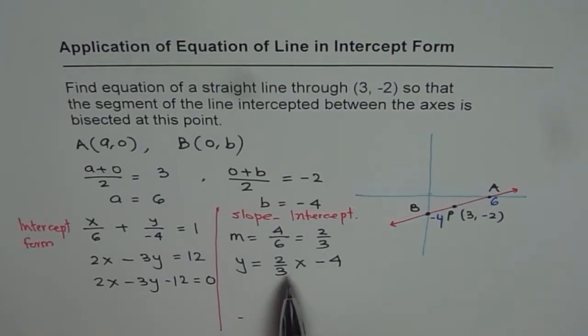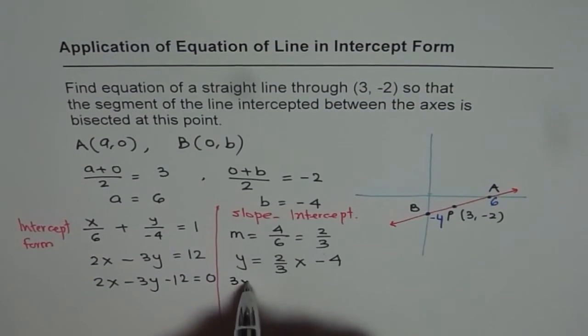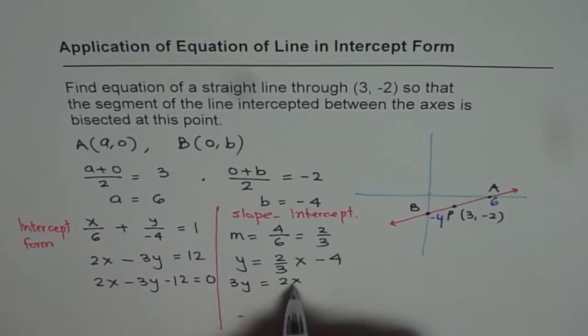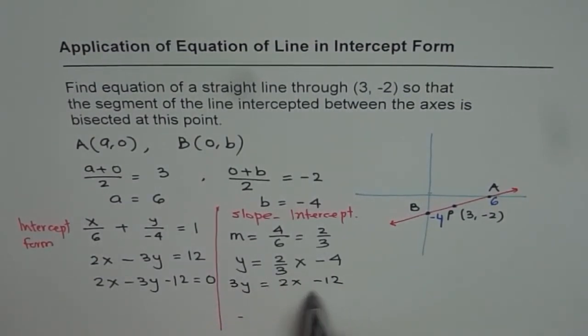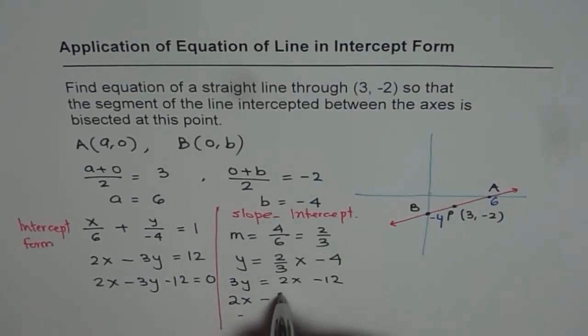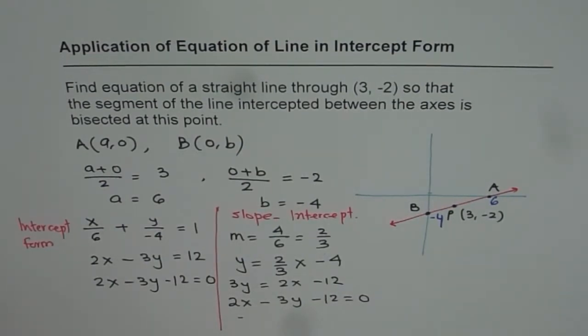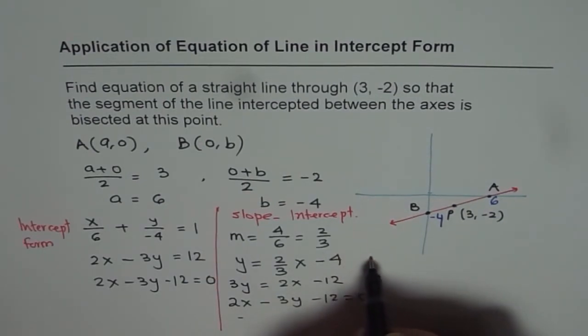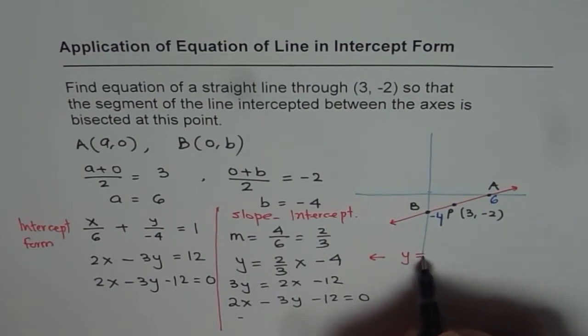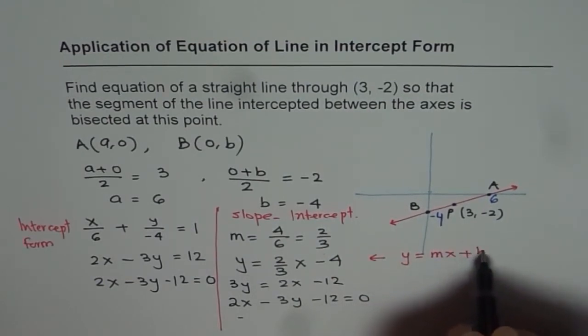Now if you want to check, is it the same thing or not? If I multiply by 3, so I get 3y equals to 2x - 12. Bringing them together will give me 2x - 3y - 12 equals to 0. Exactly the same equation. Perfect. So either way you could get. So this is where I've utilized slope intercept form, which is y equals to mx plus b.